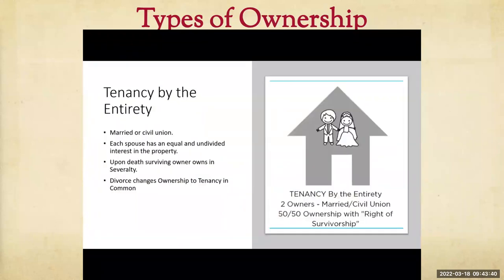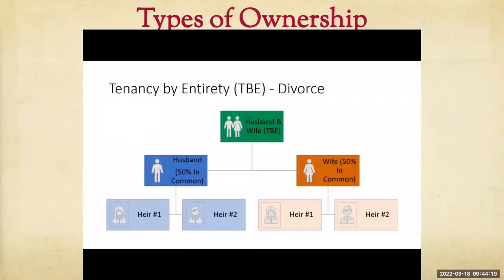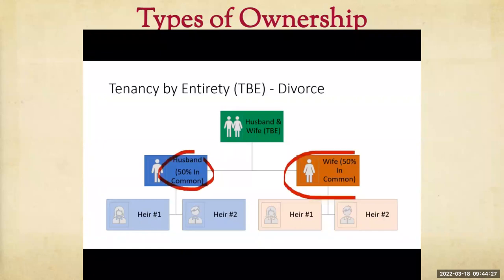Tenancy by the entirety is a type of concurrent estate that occurs when the owners of the property are married. Each spouse has an equal and undivided interest in the property — each mutually owns the entire estate. In the event one spouse dies, full title automatically passes to the surviving spouse, who then owns in severalty. This is called right of survivorship. Divorce changes tenancy by the entirety to tenants in common, allowing each divorced party to will to their respective heirs.